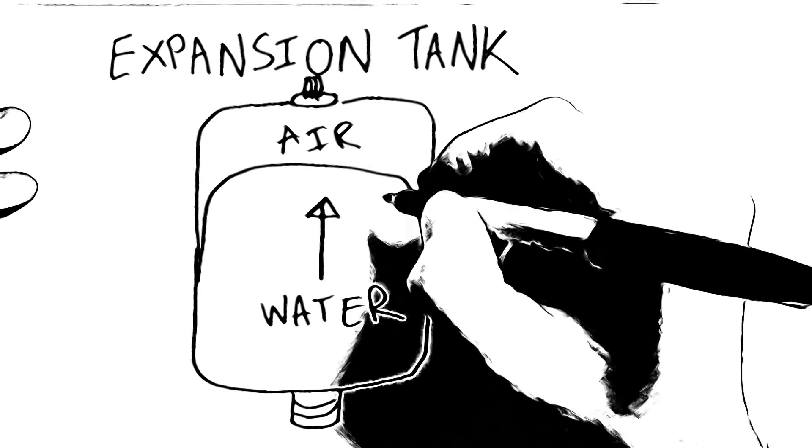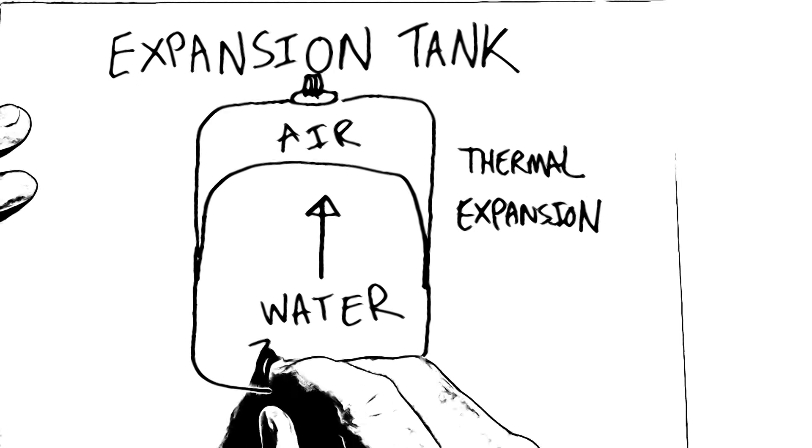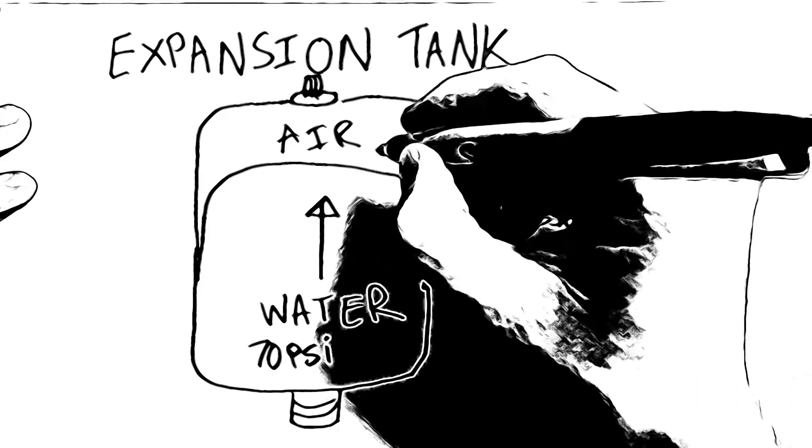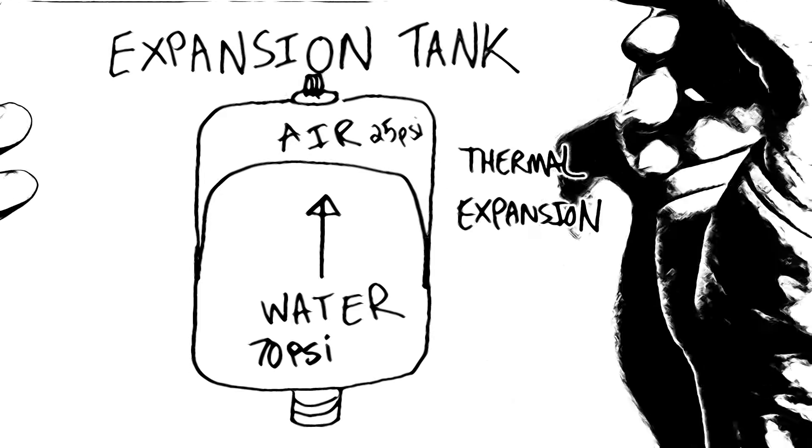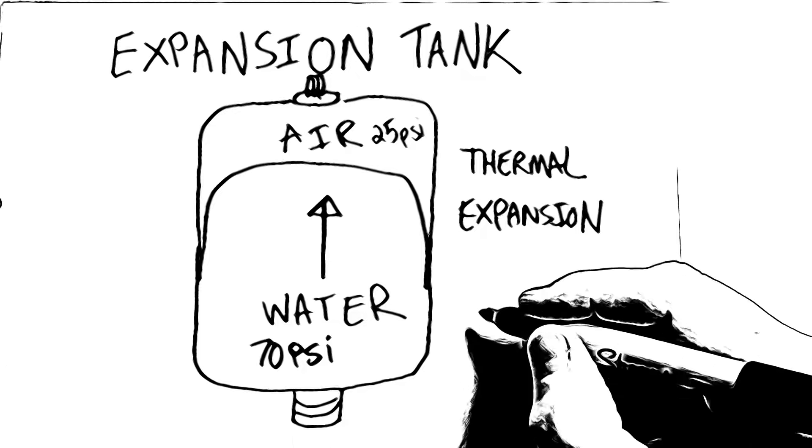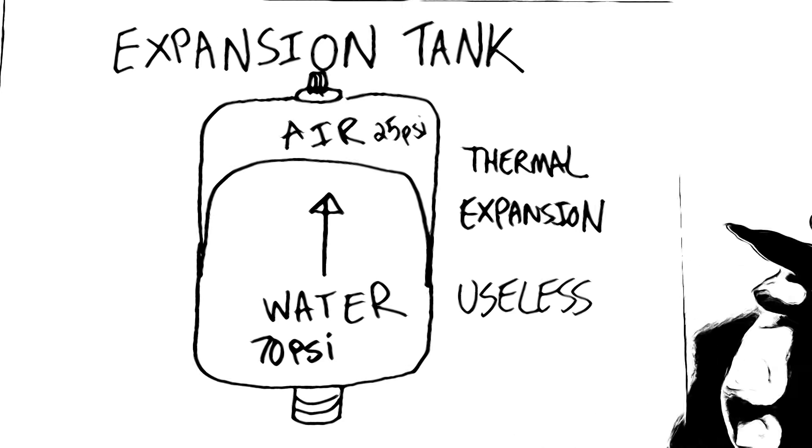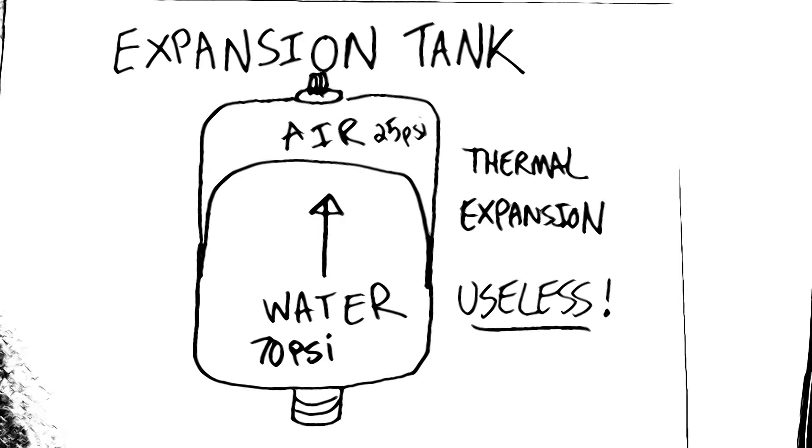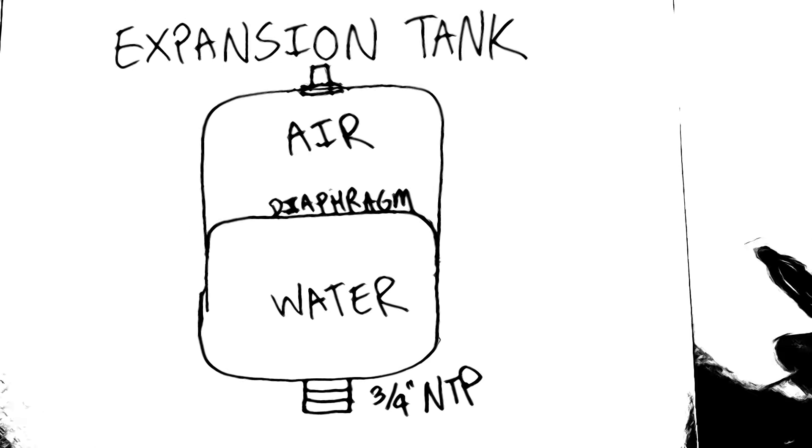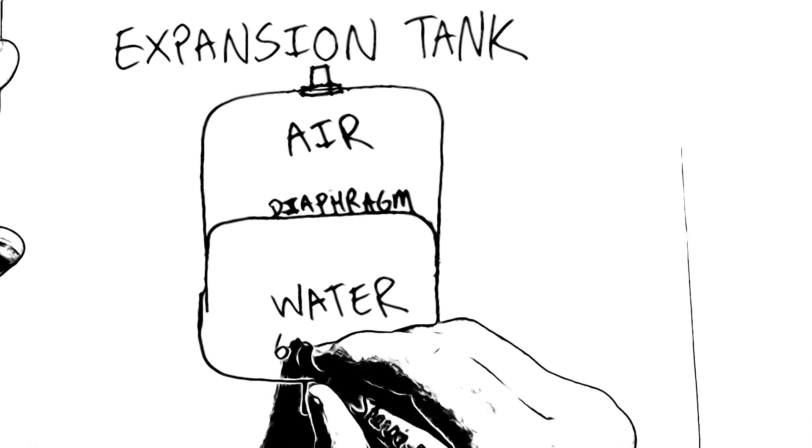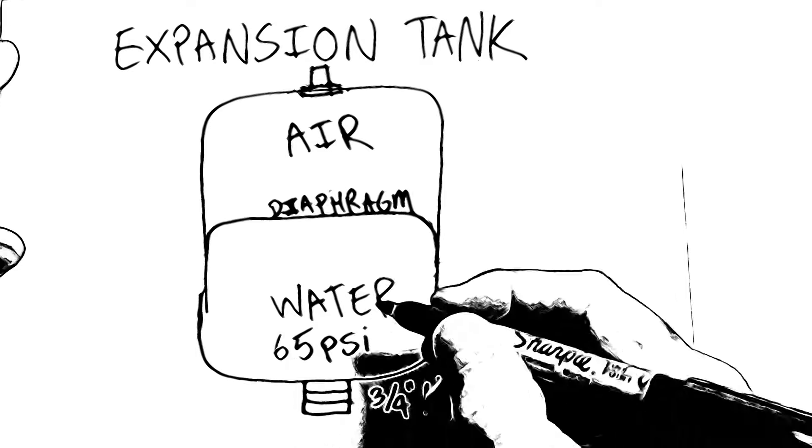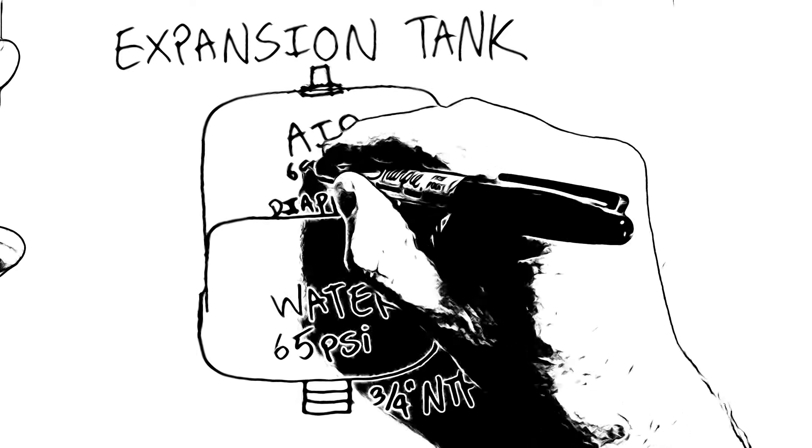So what happens if you install an expansion tank without adjusting the air pressure inside of it? Well, for example, if there's 70 psi on your water system and you only have 25 psi in the air chamber, this would immediately compress the air, rendering the expansion tank useless. The important thing here is to remember that the air pressure should match pretty close to the water system pressure.